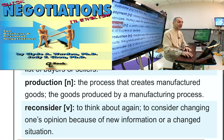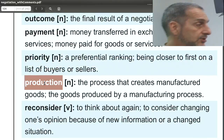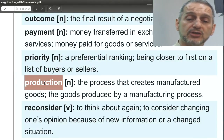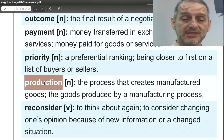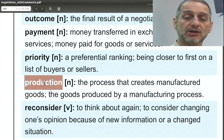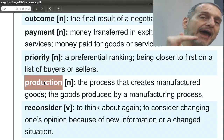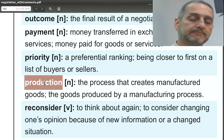Priority is very positive and makes it sound like the relationship is positive — a great word to use. Now you can use it to get something from the other side. You can say it's our priority to get a lower price, but it's not the same as saying we have to get this or that it's our limit.